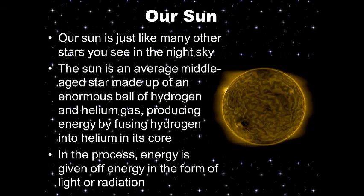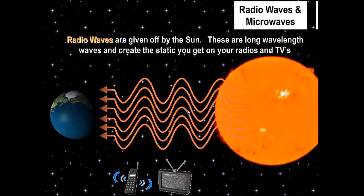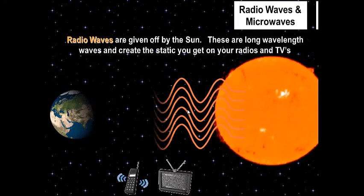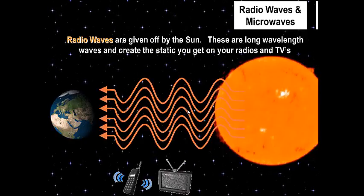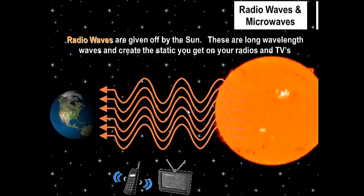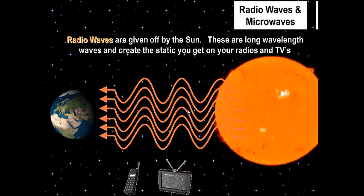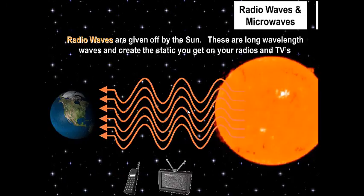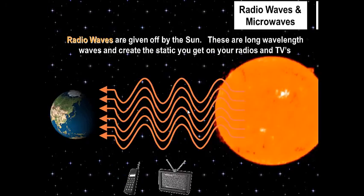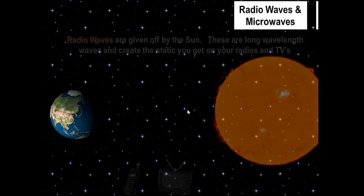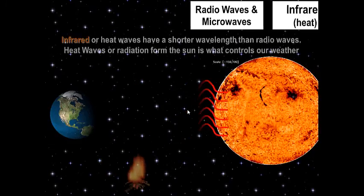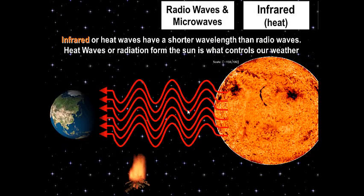What is radiation? There are different types. Radio waves, which your cell phones operate on, are given off by the Sun. These are long-wavelength waves and create the static you get on your radios and TVs. That static you hear when flipping through radio stations is radio waves given off by the Sun.